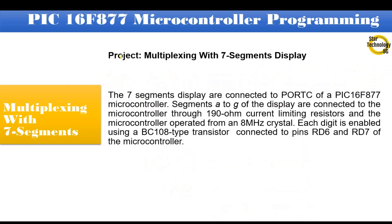In this project, the 7 segment displays are connected to port C of the PIC16F877 microcontroller. Segments A to G of the display are connected to the microcontroller through 190-ohm current limiting resistors, and the microcontroller operates from an 8 MHz crystal.